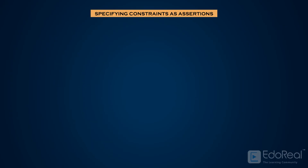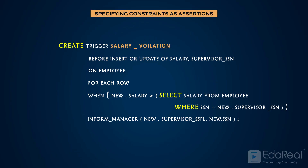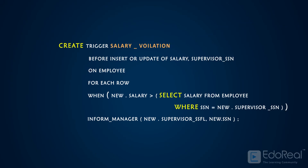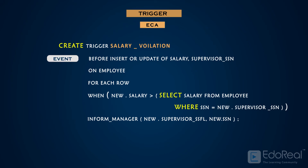The trigger can be created using the CREATE TRIGGER command. The trigger is given the name 'salary violation,' which is used to remove or deactivate the trigger later. A typical trigger is regarded as an ECM model. The ECM model has three components: event, condition, and action.